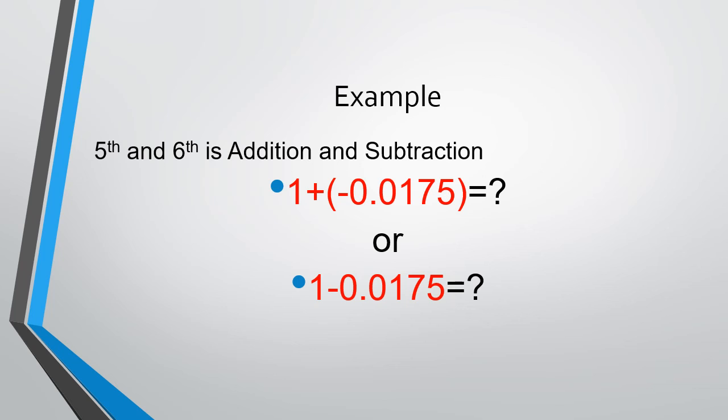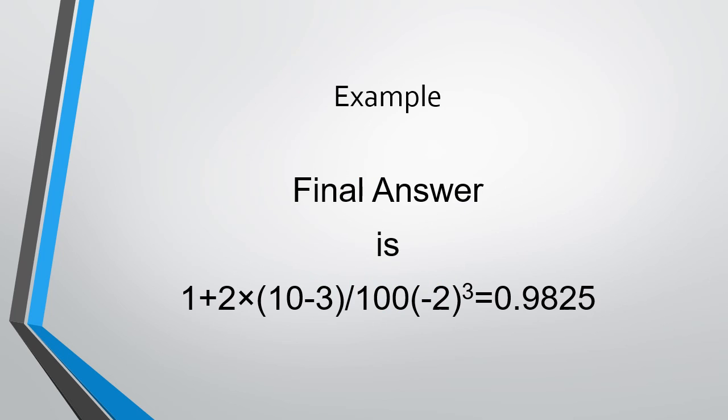In this example, after calculating out, your final answer should be 0.9825. So the final answer for 1 plus 2 times 10 minus 3 over 100 times minus 2 to the third, following order of operations, is 0.9825.